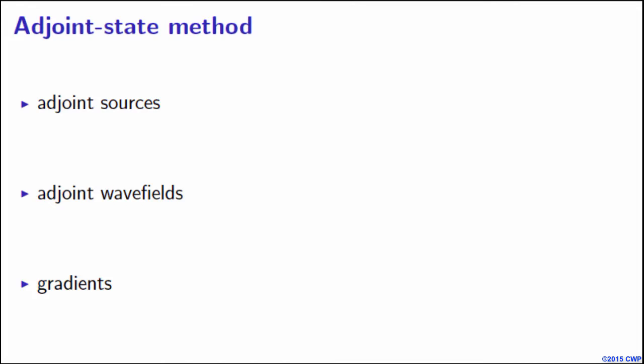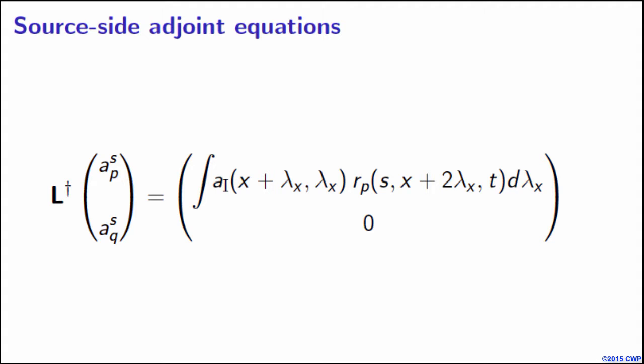These are source-side adjoint equations. The dagger symbol stands for adjoint propagation. What we notice here is that the Q component of the adjoint source is equal to zero because we are not using the Q component in imaging. The P component is given essentially by correlation between penalized extended image and shifted receiver wavefield.